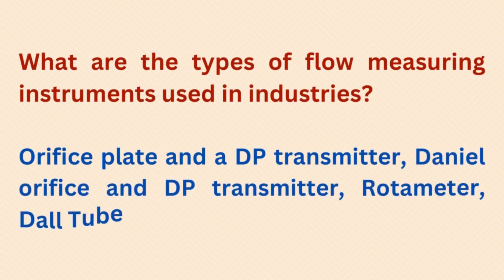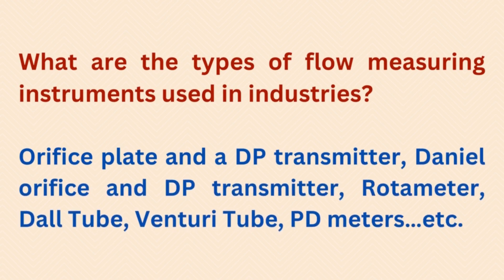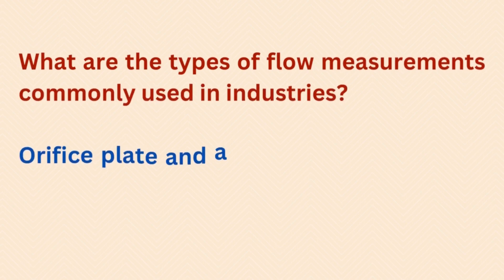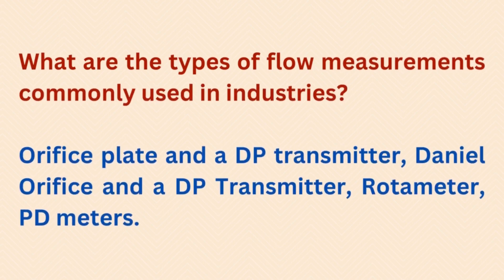What are the types of flow measuring instruments used in industries? Orifice plate with a DP transmitter, Daniel orifice with DP transmitter, rotameter, dall tube, venturi tube, PD meters, etc. The types of flow measurements commonly used in industries include orifice plate with a DP transmitter, Daniel orifice with a DP transmitter, rotameter, and PD meters.